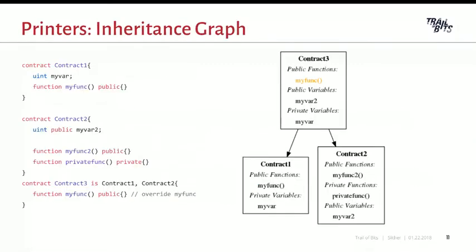As an example of a printer: if you have a codebase with three contracts, you can use the inheritance graph to get a quick overview of the dependencies between each function and what functions are overridden from another contract.